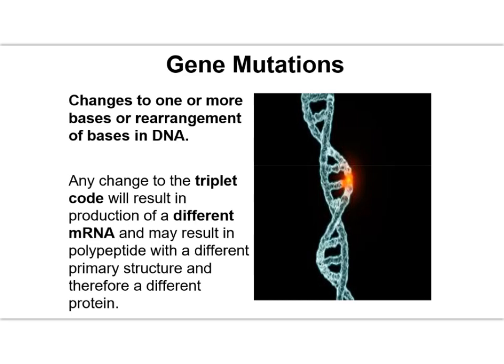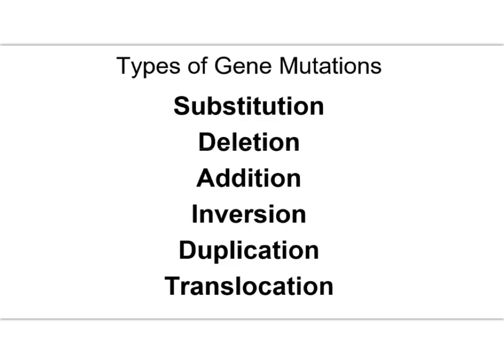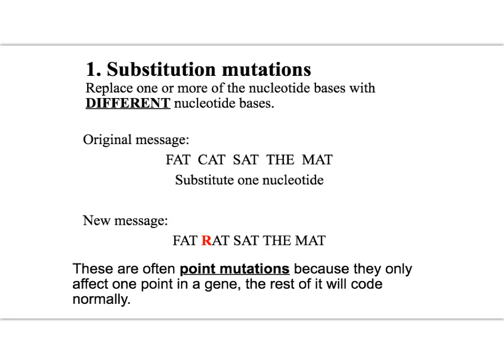It could code for a different protein being produced after protein synthesis. Here are the six mutations you need to know for A-level. The first one is a substitution mutation — it's an example of a point mutation. It only affects one nucleotide within the gene and one position within the gene. It's not a frameshift, which we'll see in a minute.